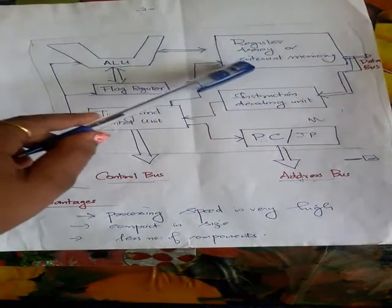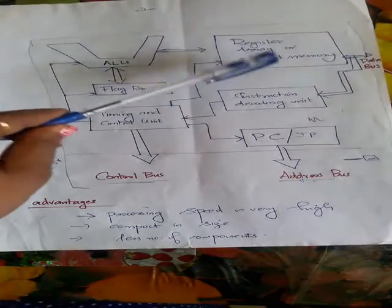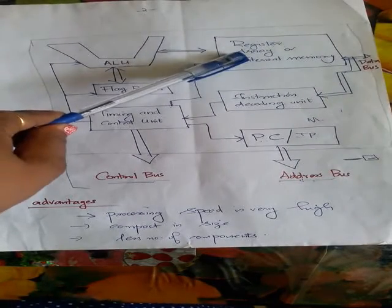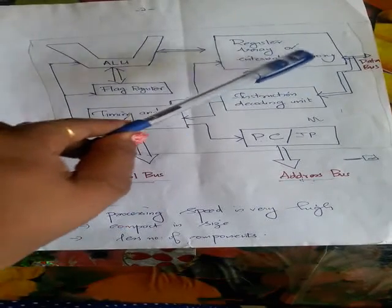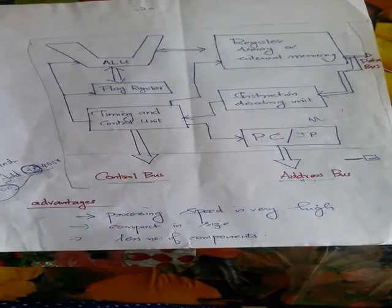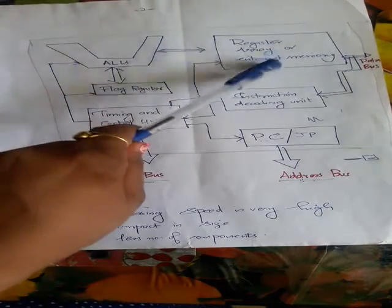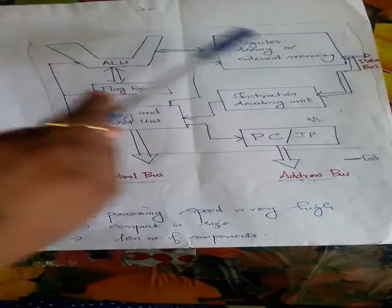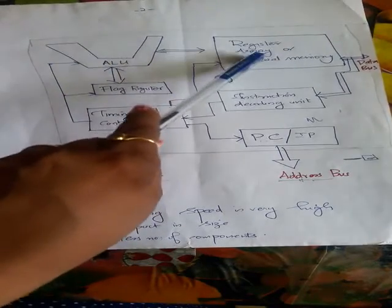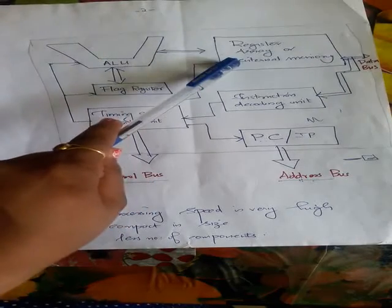The register array is actually an internal storage device, and that is why it is also known as internal memory. For doing any operations in the ALU, we need to give information from this memory to the ALU. The input of the ALU will be given from this register array, and the output of the ALU will also be stored in the register array.